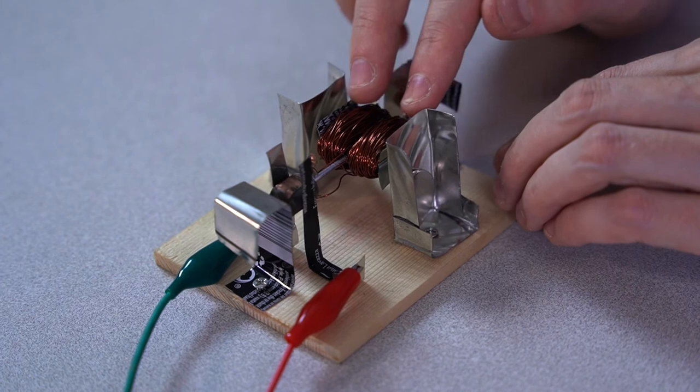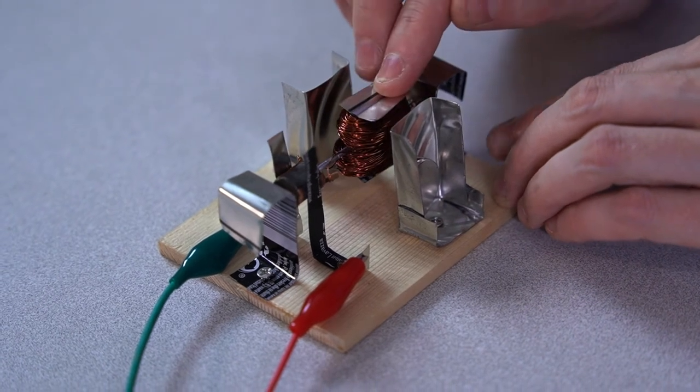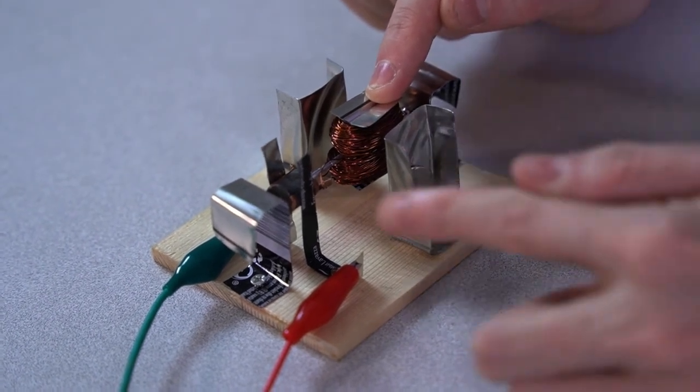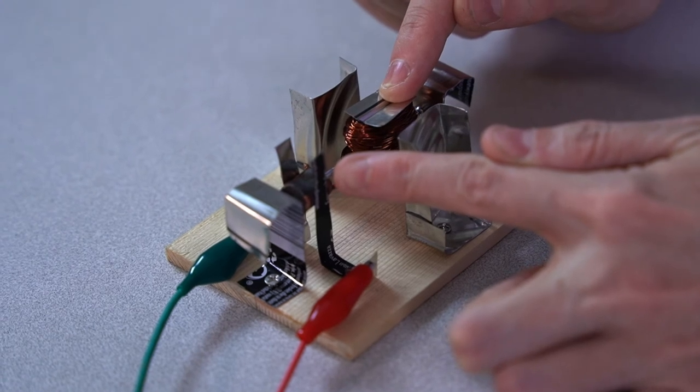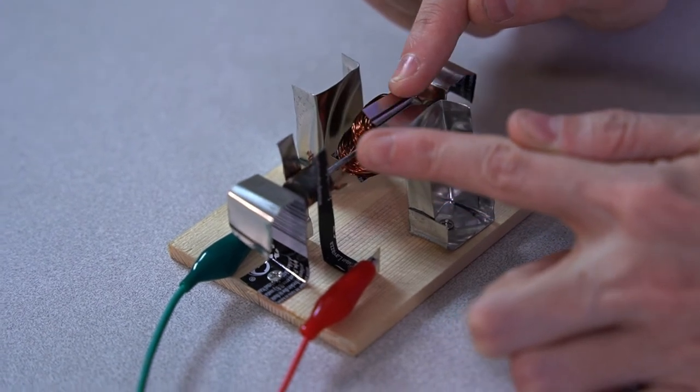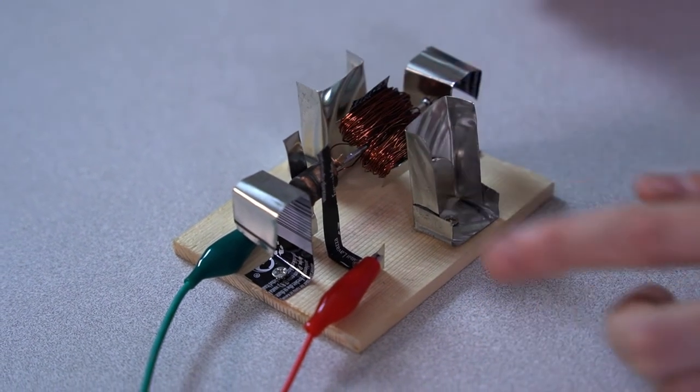But if you have trouble getting it to work, you might need to adjust the brushes so that they don't press too forcefully against the commutator. By the way, you're going to want to make sure that the commutator is lined up so that the poles of the rotor are vertical when the commutator makes electrical contact like this. You don't want them to be horizontal because then the motor wouldn't have any torque.